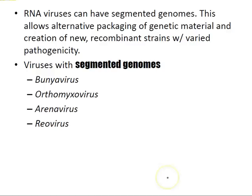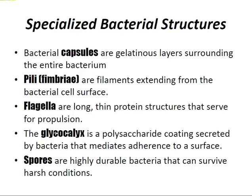RNA viruses can have a segmented genome, which allows for alternative packaging of genetic material and the creation of new recombinant strains with varied pathogenicity. This includes the bunyavirus, orthomyxovirus, arenavirus, and reovirus.